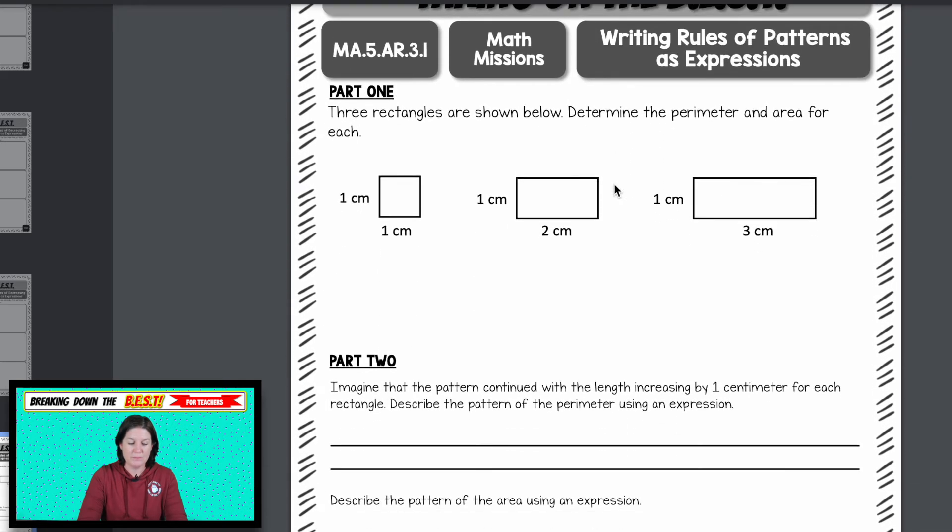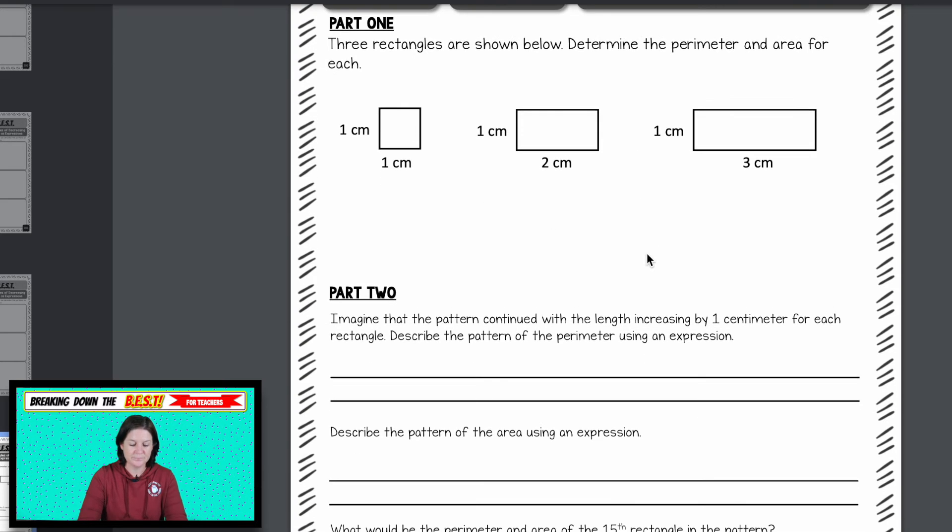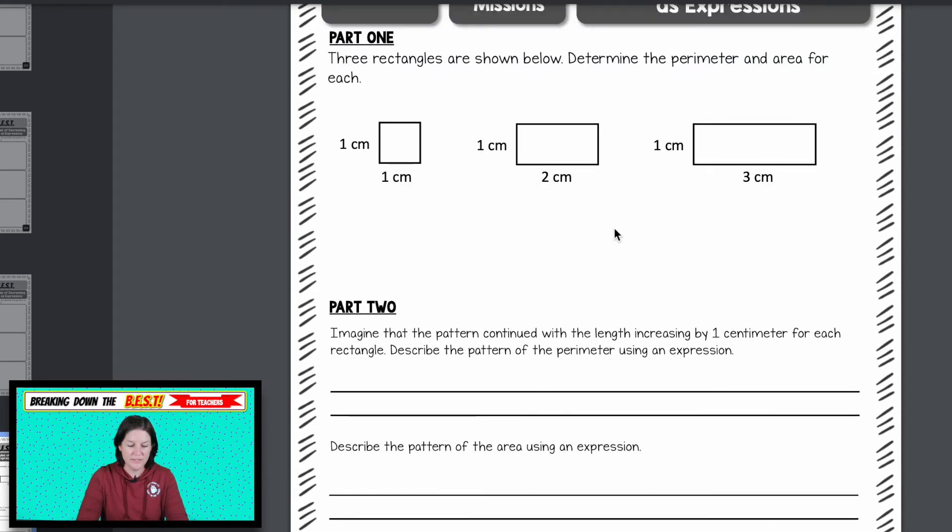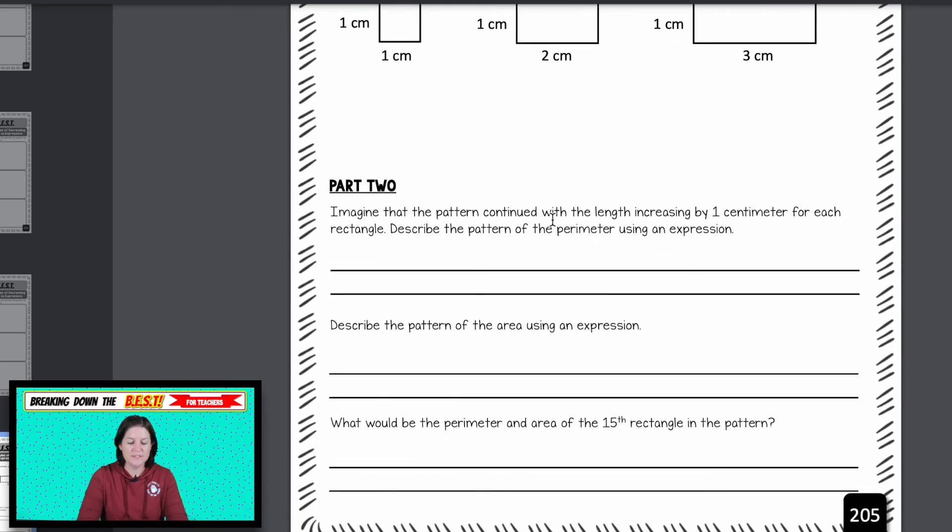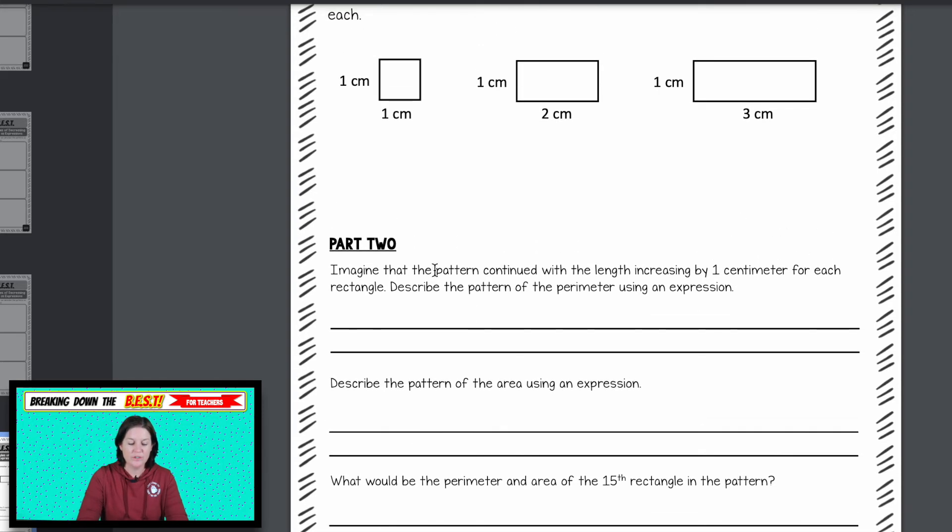This is your math mission. So in this case, we're using what we know about perimeter and area to identify a pattern. So it's taking it up a notch. It says three rectangles are shown below, determine the perimeter and area for each. So this one would be considered your first term, your second term, and your third term. And imagine that the pattern continued with the length increasing by one centimeter for each rectangle. Describe the pattern of the perimeter using an expression.